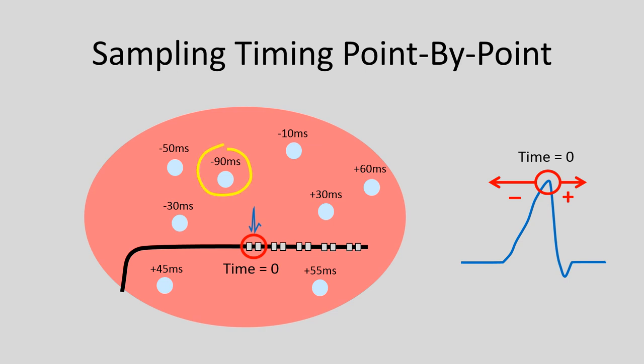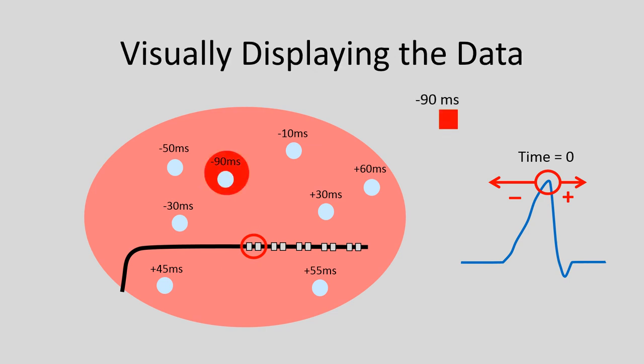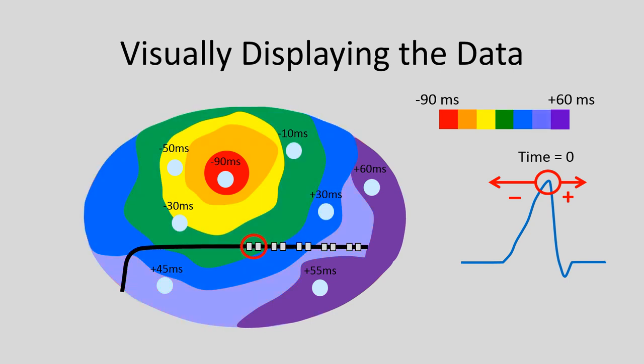For example, here is the very earliest spot we have found — at minus 90 milliseconds in this hypothetical example. Mapping systems have some general conventions used regardless of vendor. Typically, the earliest spot is identified with the color red, the latest spot or region is identified with the color purple, and all the spots in between are the other colors of the rainbow. So instead of reading each number on the screen, you can quickly scan for the red area, which tells you that's the earliest spot.